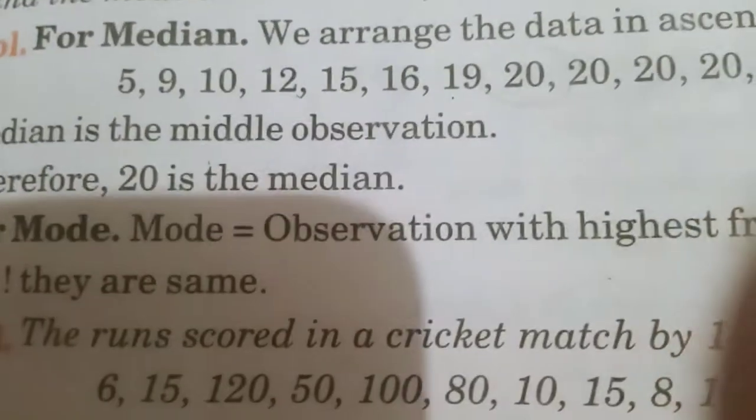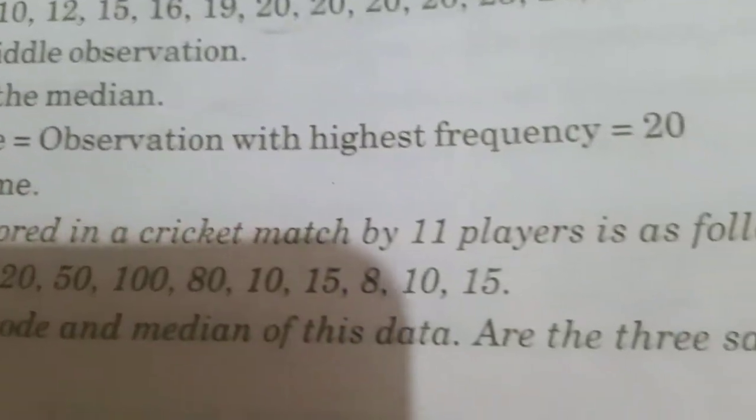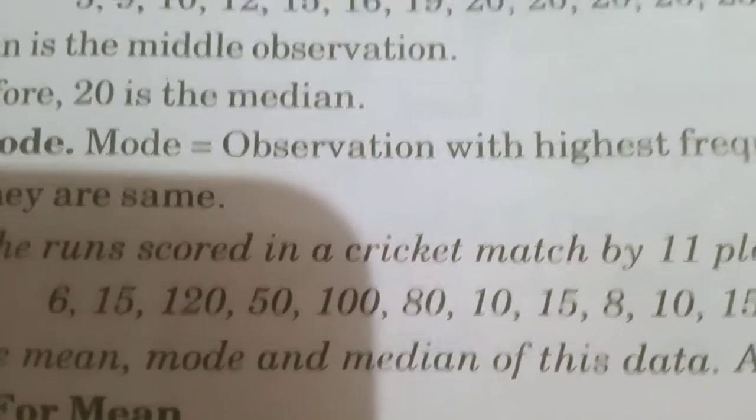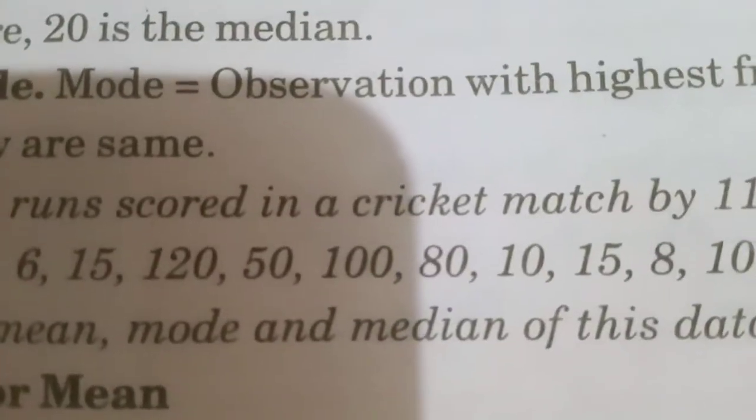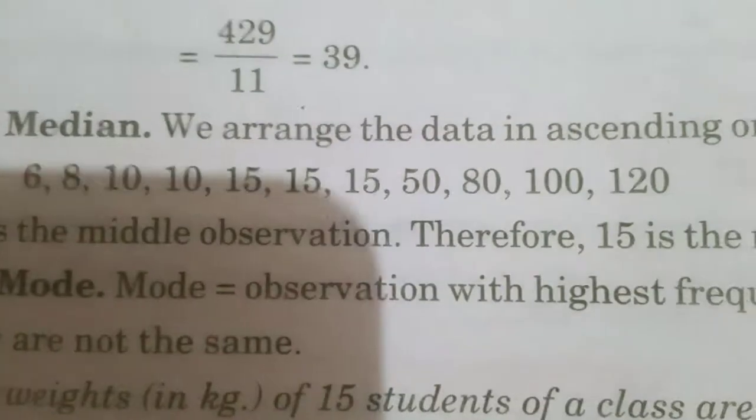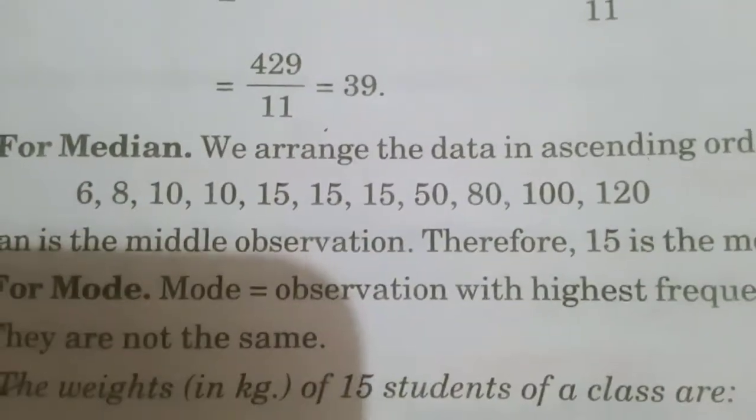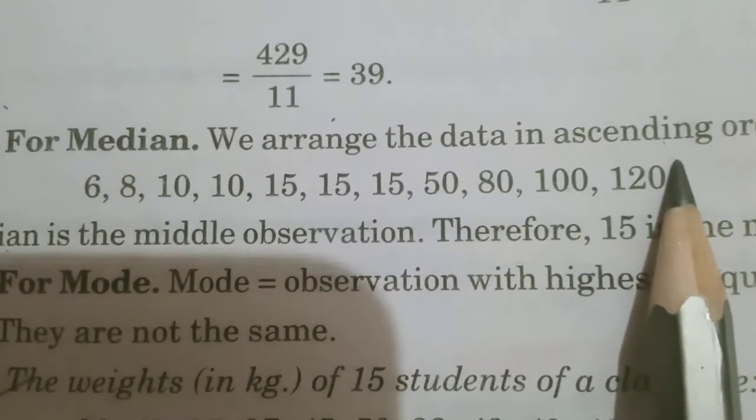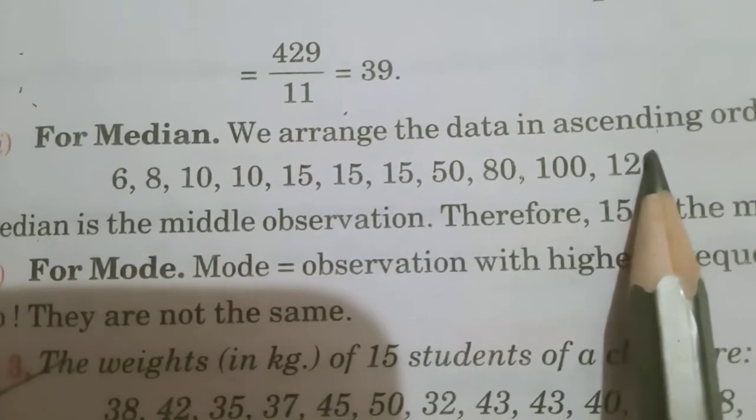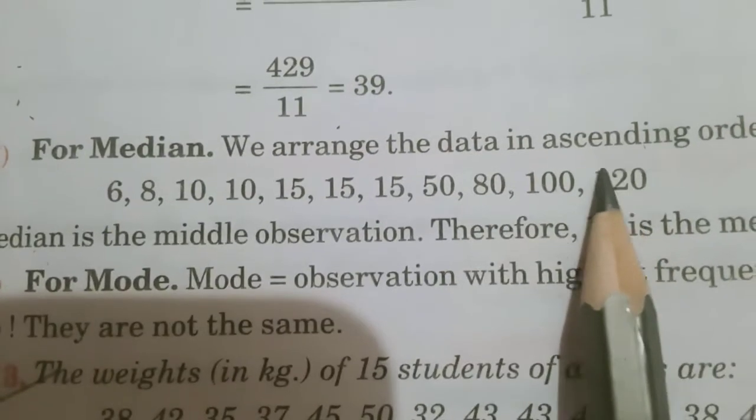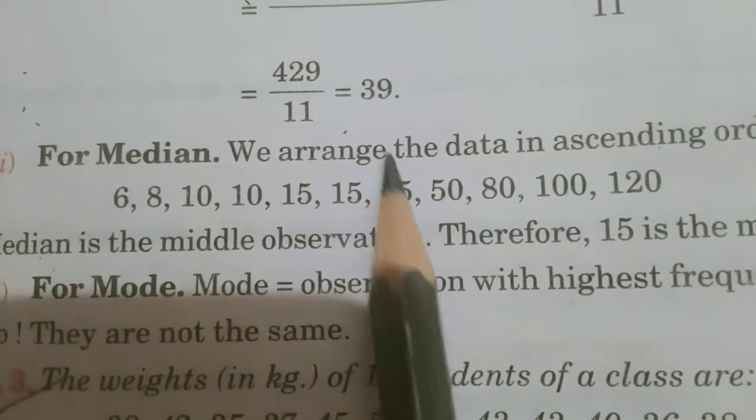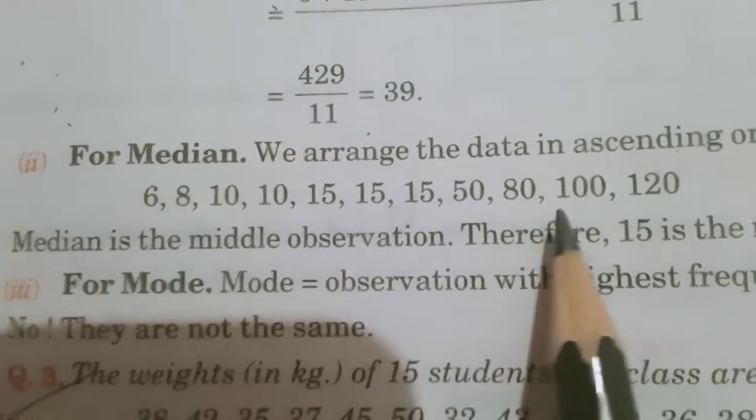See the next question. The runs scored in a cricket match by 11 players is as follows. Okay? Find mode, mean and median. Mean and mode initially we have found it. Now, we find median. Again, arrange the data in ascending or descending order. Then, we arrange the data in ascending order. Ascending order is 6, 8, 10, 10, 15, 15, 15, 15, 50, 80, 120. Total observations are how many? In the question, total observations are 11 players. Then, 11 by 2 means 6th observation. 1, 2, 3, 4, 5, 6. 6th observation is 15. There, 15 is the median of the data. Okay?